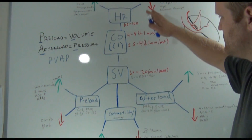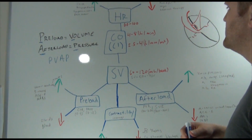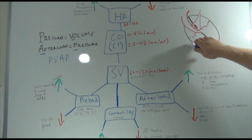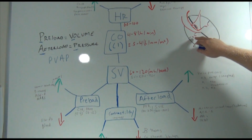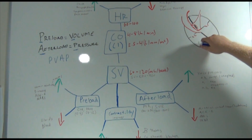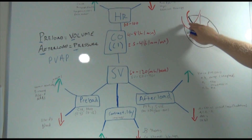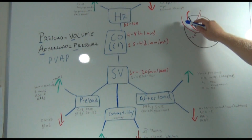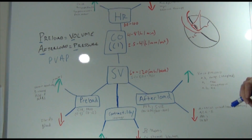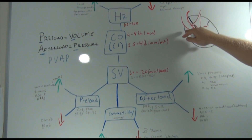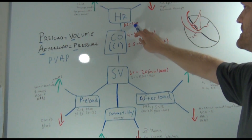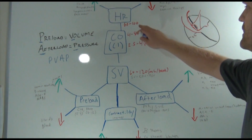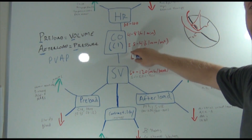This chart covers hemodynamics and what you need to know. We have our heart rate — atrium, ventricles, aorta, tricuspid, pulmonic valve, mitral valve, aortic valve. Atria on top, ventricles on bottom, with valves in between. Heart rate originates in the sinoatrial node in the atria, and should normally be between 60 and 80. Heart rate directly affects cardiac output.